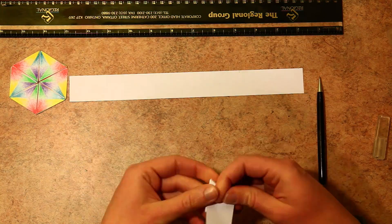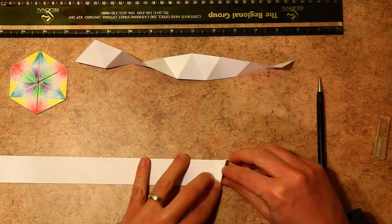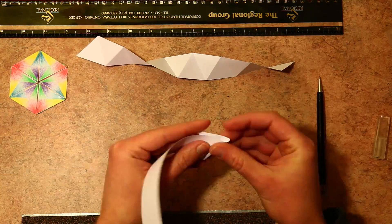Now for the hexahexaflexagon, which has six sides. We're going to have to double the number of triangles we have, so we need 18 triangles.